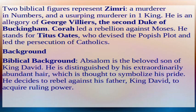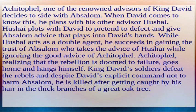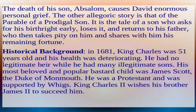Biblical Background: Absalom is the beloved son of King David, distinguished by his extraordinarily abundant hair, which is thought to symbolize his pride. He decides to rebel against his father King David to acquire ruling power. Achitophel, one of the renowned advisors of King David, decides to side with Absalom. When David comes to know this, he plans with his other advisor Hushai. Hushai plots with David to pretend to defect and give Absalom advice that plays into David's hands. While Hushai acts as a double agent, he succeeds in gaining the trust of Absalom, who takes Hushai's advice while ignoring the good advice of Achitophel. Achitophel, realizing that the rebellion is doomed to failure, goes home and hangs himself. King David's soldiers defeat the rebels, and despite David's explicit command not to harm Absalom, he is killed after getting caught by his hair in the thick branches of a great oak tree. The death of his son Absalom causes David enormous personal grief.